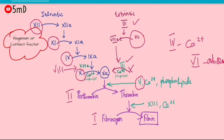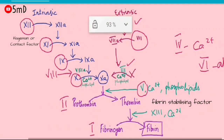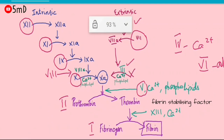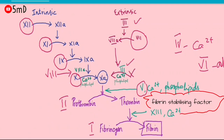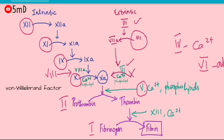Factor 12 is the Hageman factor or contact factor, which is the starting point of the intrinsic pathway. Factor 13 is the fibrin-stabilizing factor or fibrinase. There is also the von Willebrand factor, which is attached to Factor 8; only when they separate is Factor 8 activated.